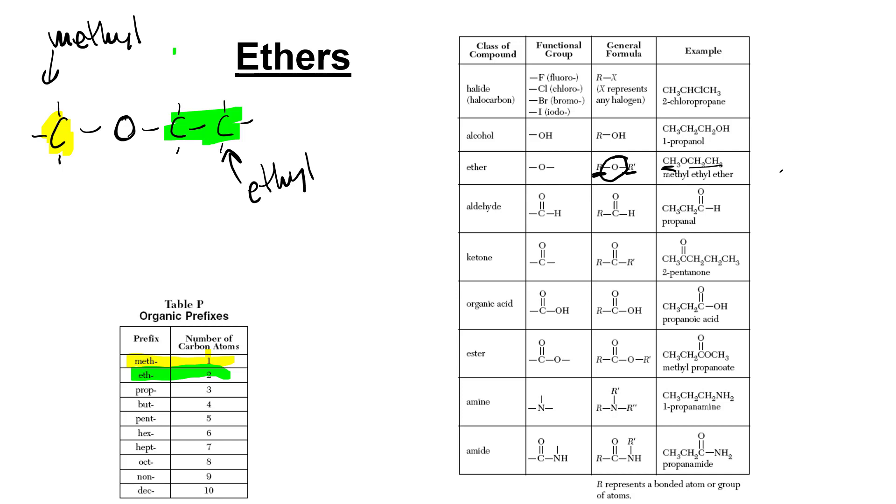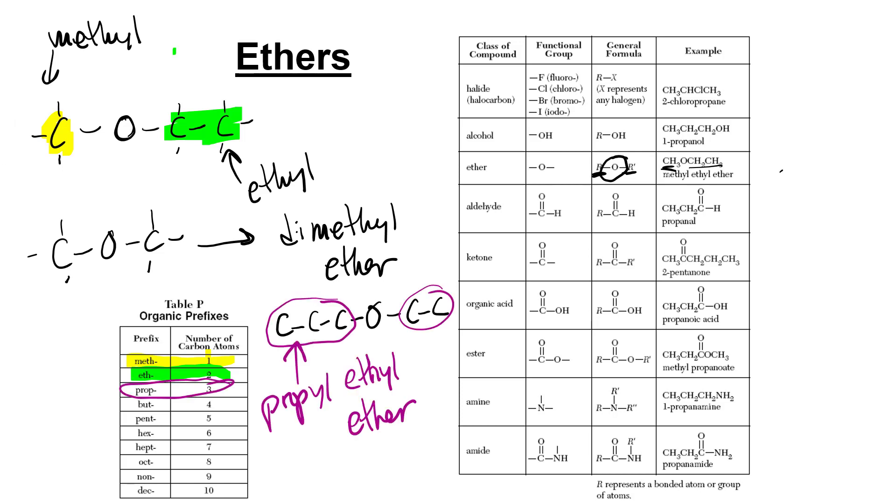We know it's an ether because it's got an oxygen stuck between two carbon chains. What if we had two methyl groups? We don't call it methyl methyl ether. We call this dimethyl ether. It's all about recognizing patterns. I'm going to give you another one and I want you to name it. So what is the name of that one? We would call that compound propyl ethyl ether because we've got a propyl group and an ethyl group hanging off each side of an oxygen. And that's what an ether looks like.